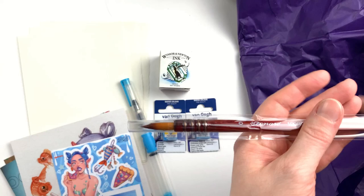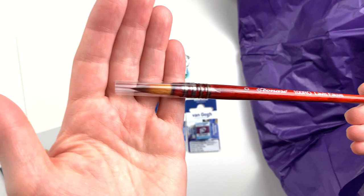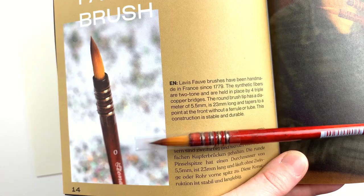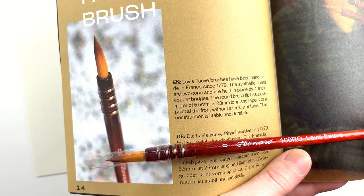Then we have a regular paint brush from Leonard. It's called La Vie Fauve and it's a size 0. It's shaped a bit like a mop brush and is made with synthetic fibers.